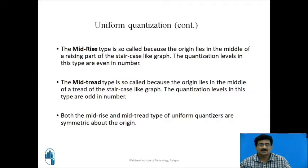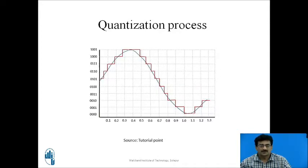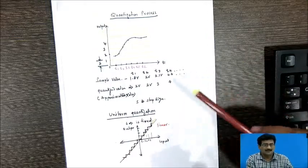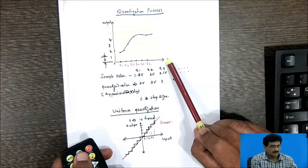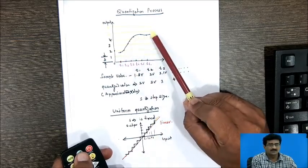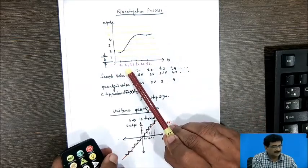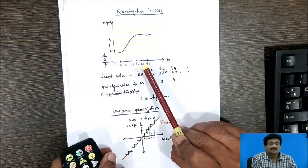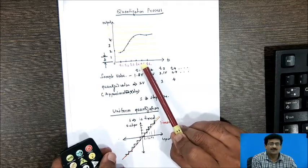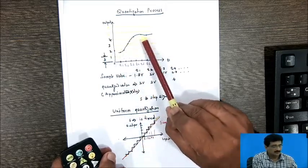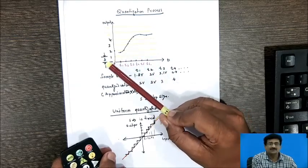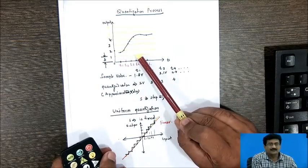Both the mid-rise and mid-tread types of uniform quantizers are symmetric about the origin. Now let us understand the overall quantization process using this diagram. Here, the output and timing axis are shown. These are the input signal samples, with sampling instances T1, T2, T3. The sampling frequency must be at least twice the maximum input signal frequency. The yellow lines shown represent the quantization levels, and the difference between two quantization levels is the step size.